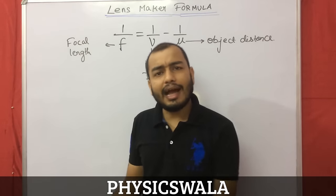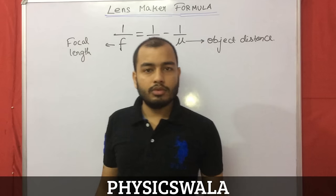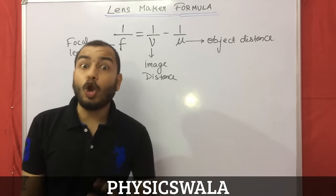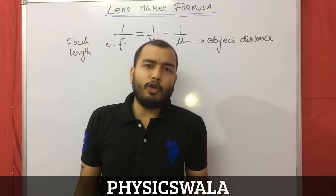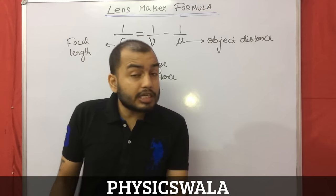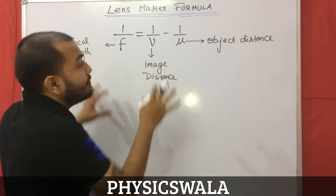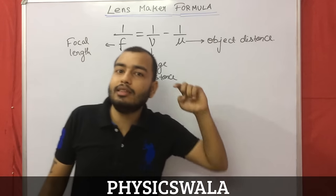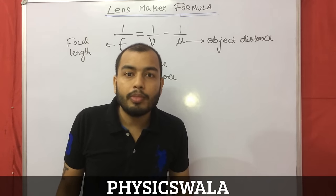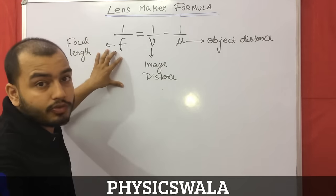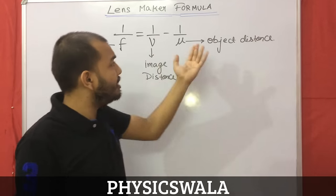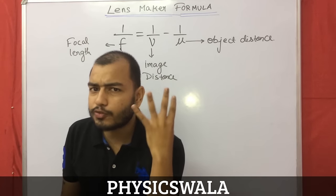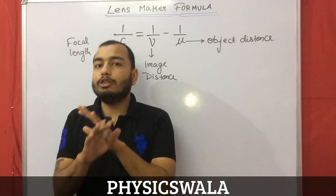We know that images are formed by lenses at different positions when the object is placed at different positions. Basically you have two kinds of lenses: convex lens and concave lens, and both form different kinds of images. How to use this formula for lenses is very important — you need to understand when f is positive or negative, and similarly for v and u.